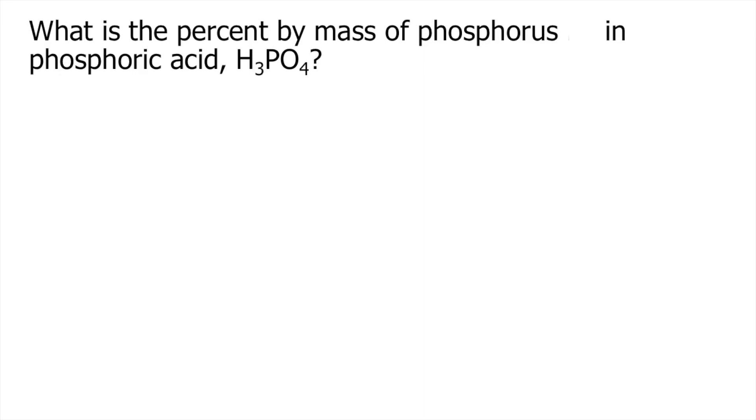What is the percent by mass of phosphorus in phosphoric acid? If you want to get the percent by mass of an element in a compound, the formula is N times the molar mass of the element divided by the molar mass of the compound times 100.